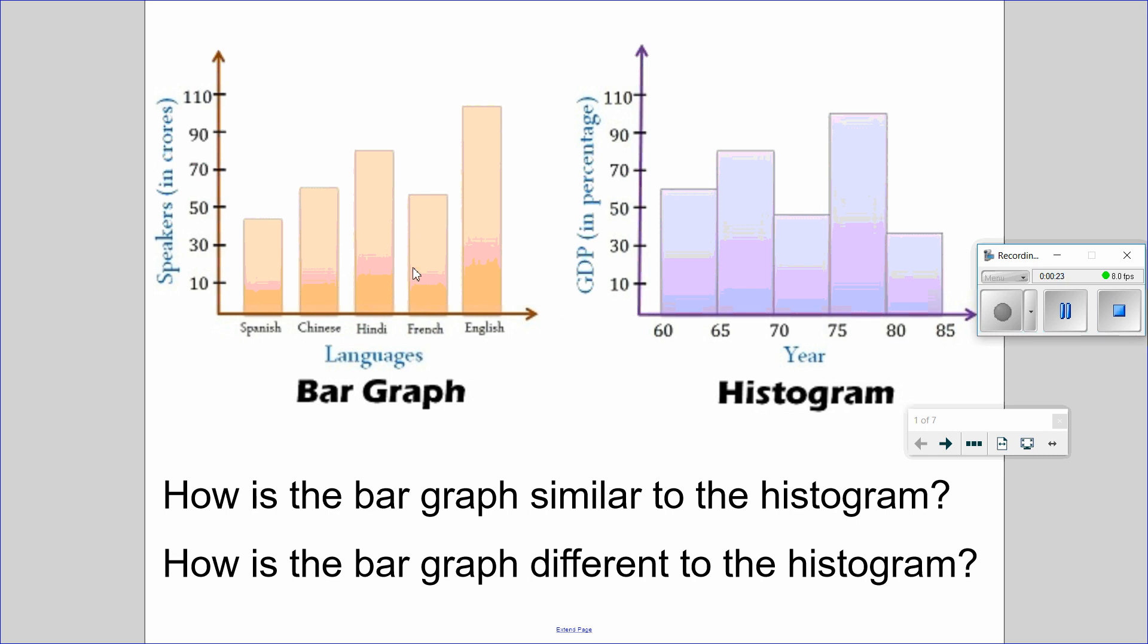How is the bar graph similar to this histogram? Think about it. How are they both similar? Well, they both have bars. They both have numbers to the side. They have labels for the x-axis and labels for the y-axis.